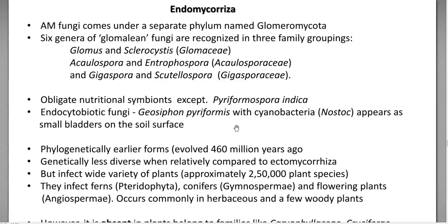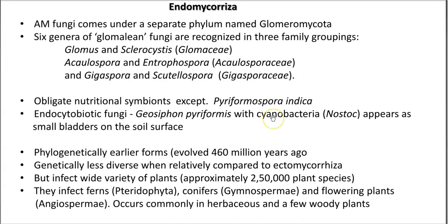These three families are Glomaceae, Acaulosporaceae, and Gigasporaceae. The genera belonging to these families are commonly recognized as Arbuscular Mycorrhizal and include Glomus, Acaulospora, Gigaspora, as well as Scutellospora.